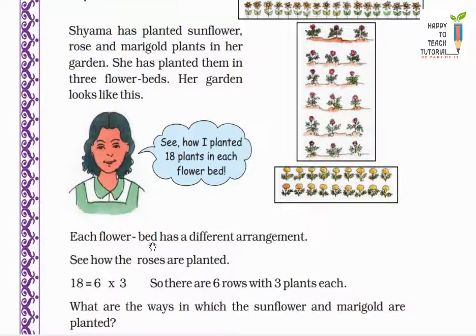Each flower bed has a different arrangement. See how the roses are planted. There are 6 rows - 1, 2, 3, 4, 5, 6 and there are 3 plants in each row. So 6 rows with 3 plants each. That means 6 into 3 is equal to 18 plants are there.